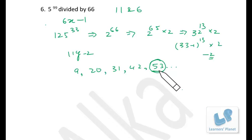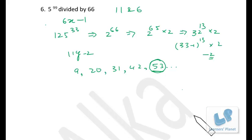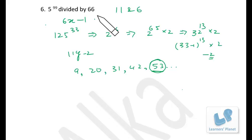When I explain it to you it takes a lot of time because you are probably doing these problems for the first time, but once you practice, you will be able to solve these problems in just one or one and a half minutes. So the method is: break the divisor into co-prime factors, find the remainder in individual cases, and then find the common value. I hope this is clear.